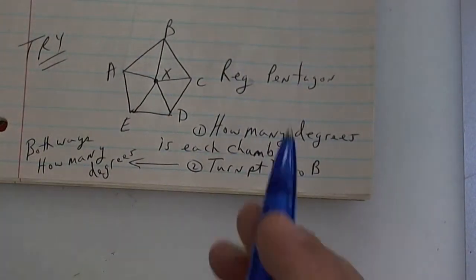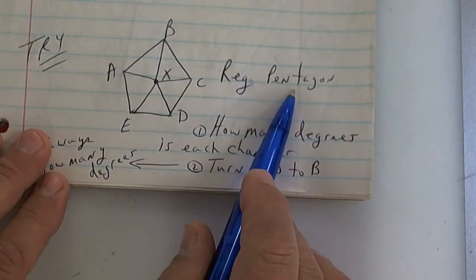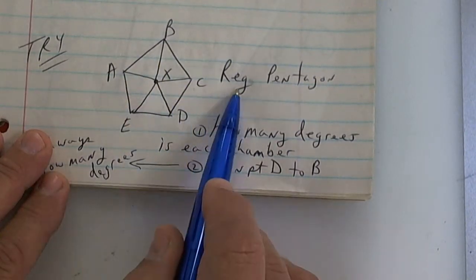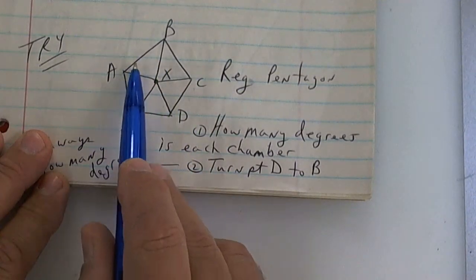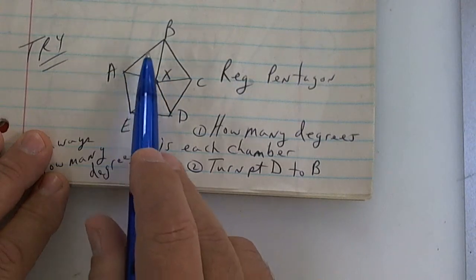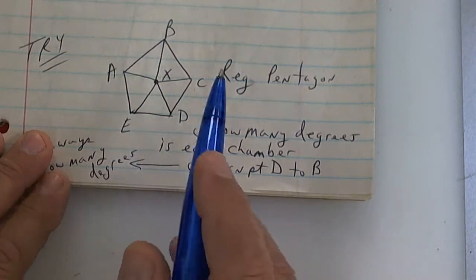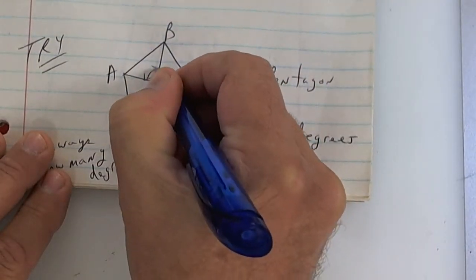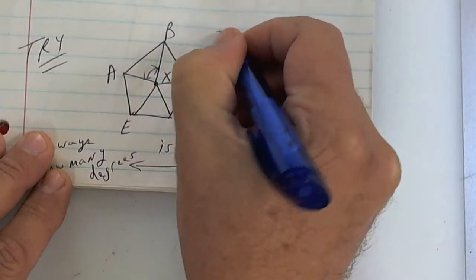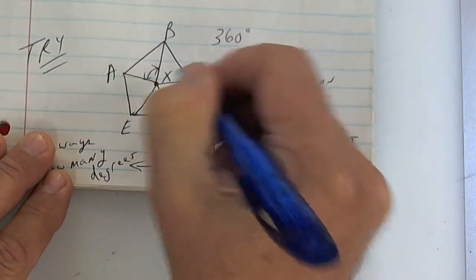Here's the bell work. This is a regular pentagon, one two three four five sides. Regular because the sides are equal and the angles are equal. Those are equal and these inside ones are equal. Well, you got to figure out the inside one.